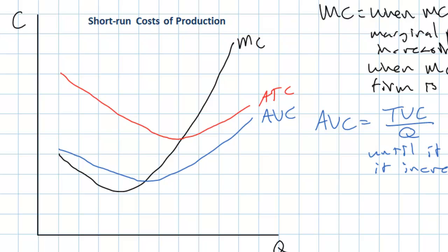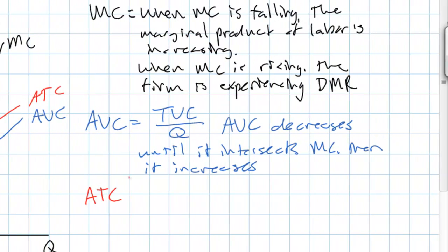That brings us to the average total cost curve. Average total cost, ATC, is the average variable cost plus the average fixed cost. Fixed costs are those which do not change as the level of output changes. A firm's fixed costs include the rent that it pays on its land or retail space, and the interest that it's paying a bank for a loan. Landlords don't care whether your bakery produces one croissant or a thousand croissants — they want to be paid the same rent every month. However, average fixed costs decrease as output increases.